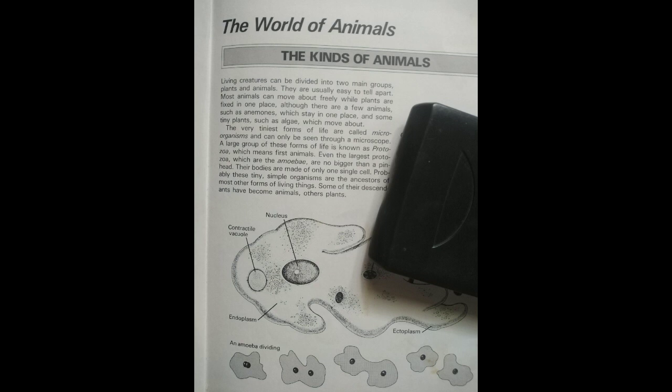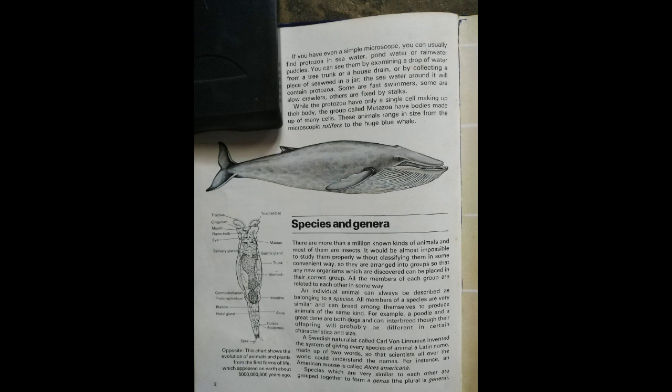Although they are both members of the metazoa group, the blue whale, the largest animal ever, may weigh as much as 130 tons, whereas the minute rotifer varies from 0.1 to 2 millimeters in length.